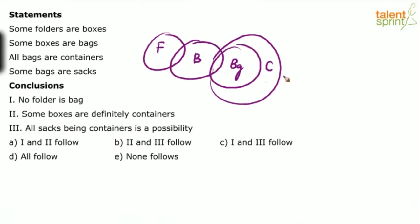All bags are containers — this is the basic way of drawing it. Some bags are sacks. There are different ways of drawing sacks: you can take sacks completely inside containers, or draw sacks outside containers. Both satisfy 'some bags are sacks'. Whether sacks are outside or inside containers, that condition must be satisfied. So that's the basic diagram.